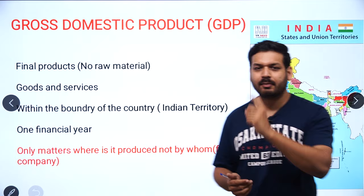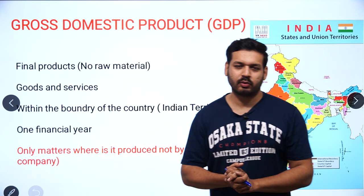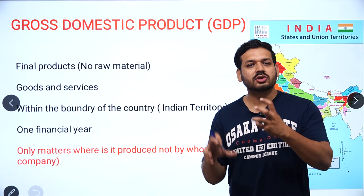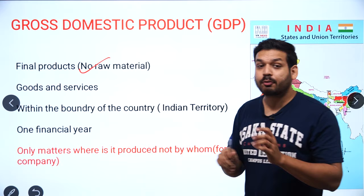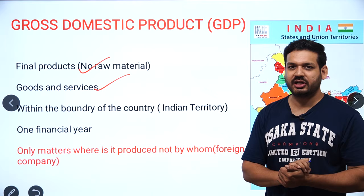First, we will take the topic GDP — Gross Domestic Product. GDP is calculated on the final product of goods and services. For example, I bought a car and the car's final cost is 6 lakh rupees, so 6 lakh rupees is counted in GDP. Remember, it is counted on the final product — not the raw material cost. Both goods and services are calculated in GDP.